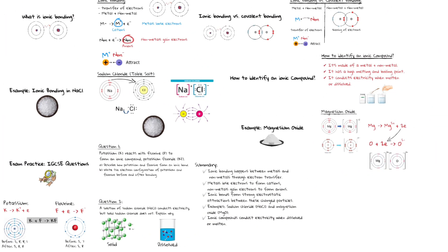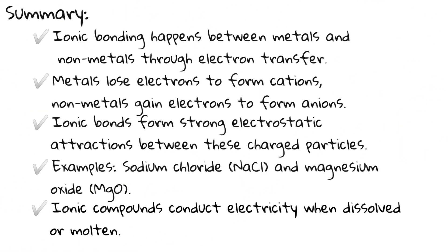Let's quickly recap what we've learned. Ionic bonding happens between metals and nonmetals through electron transfer. Metals always lose electrons to form cations; nonmetals always gain electrons to form anions. Ionic bonds form due to strong electrostatic attractions between these oppositely charged particles. Ionic compounds conduct electricity only when dissolved or molten.